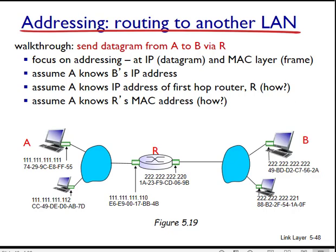Because the router in figure 5.19 has two interfaces, here's this one, 111.111.111.110, which is an IP address for this interface on router R. And this one is 222.222.222.220, which is the IP address for this interface also on router R. So we have a subnet on the left and we have a subnet on the right.